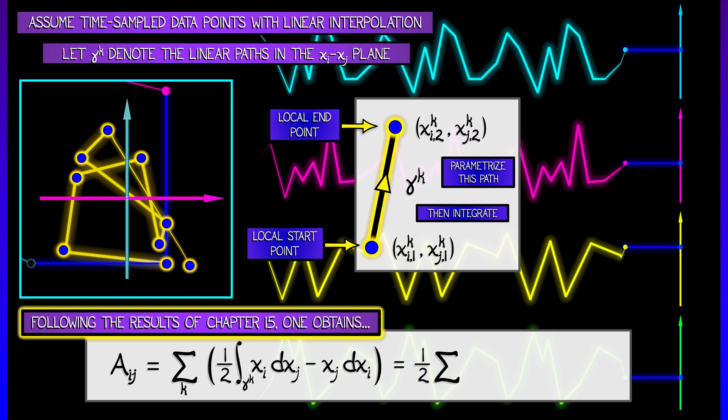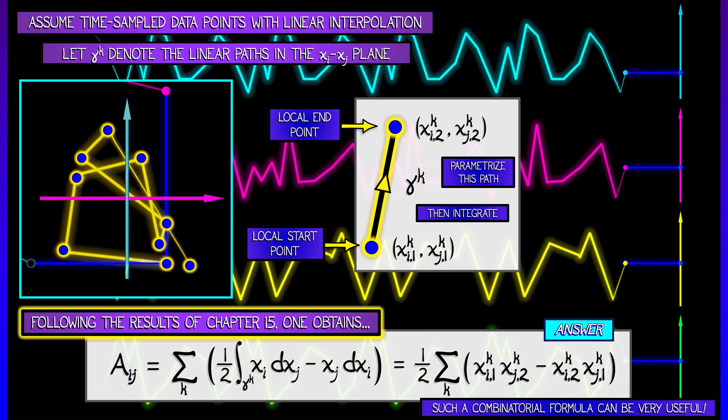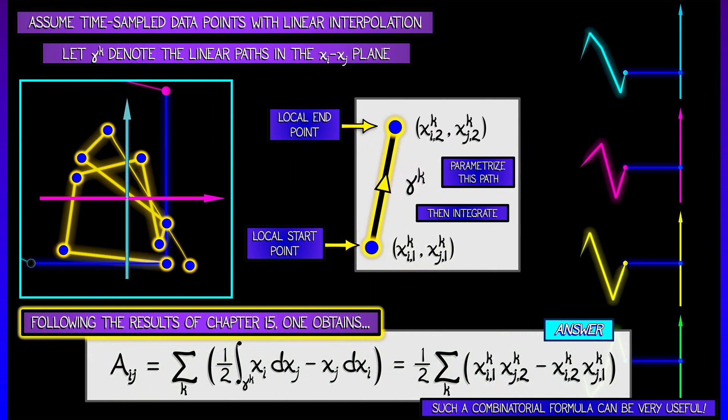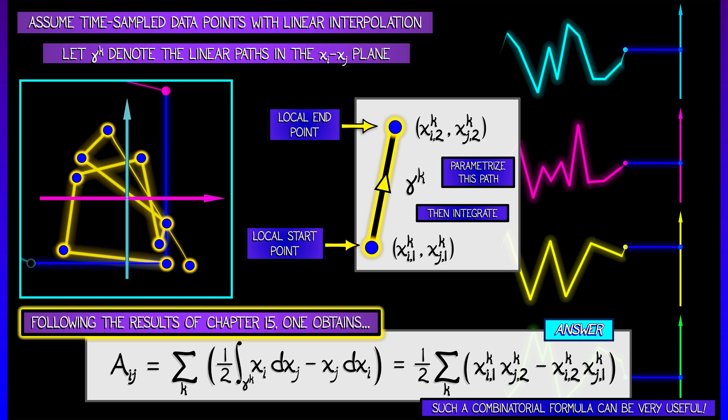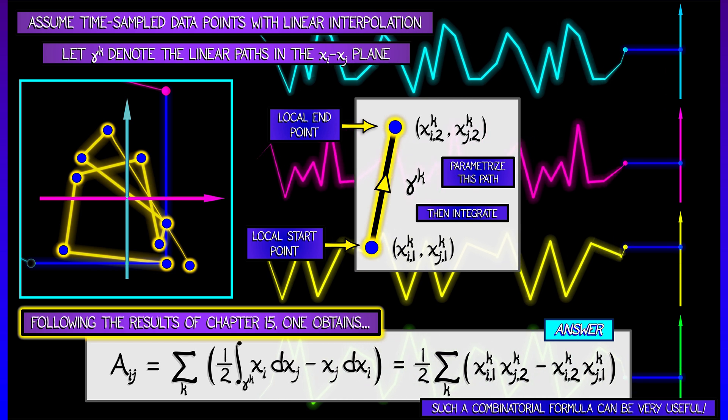Using those exact same methods, we can parametrize this path, integrate it, add them all up, and we get a combinatorial formula that a sub ij is one-half the sum over k, xi1k, xj2k, minus xi2k, xj1k. That is so cool! But look, let's keep thinking.